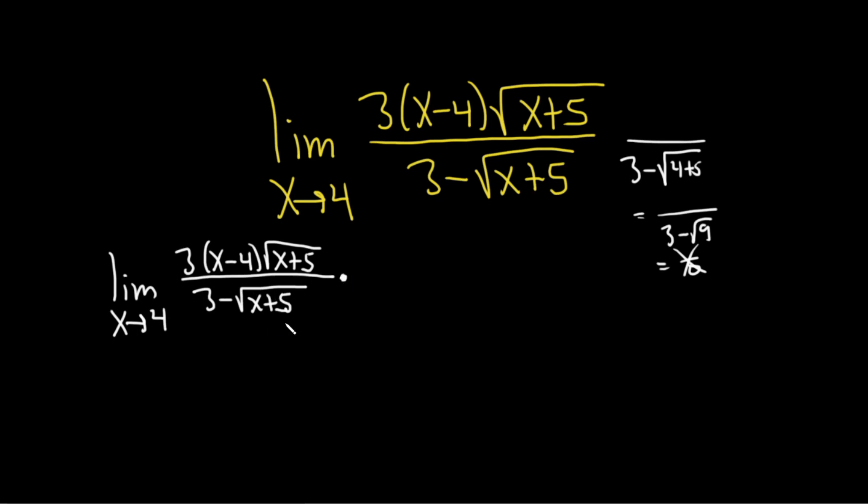So we're going to rationalize. We're going to take this piece here and we're going to flip the sign of 3 plus the square root of x plus 5 over 3 plus square root of x plus 5. Notice I wrote it on the top and on the bottom. The reason is we're basically multiplying by 1 because this cancels. And so if you're wondering why we're doing this, it's because now we can use a very powerful formula.